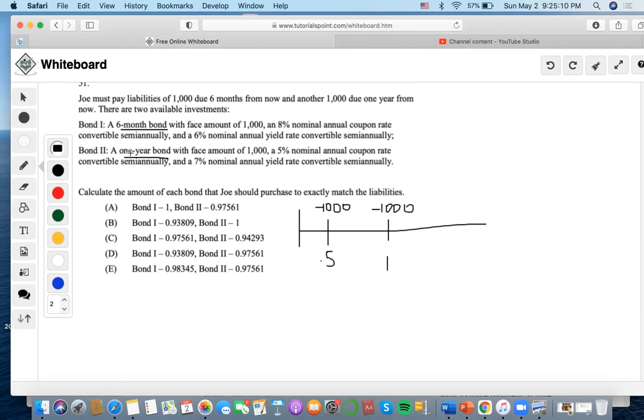Let's start with bond two, a one-year bond with face amount of $1,000, 5% nominal annual coupon rate convertible semi-annually, and 7% nominal annual yield rate convertible semi-annually. We do 5 divided by 2, which is 2.5%. Then 1,000 times 0.025 gives us a coupon of $25. Since this is only a one-year bond, the redemption of $1,000 is also paid out.